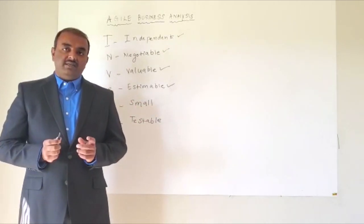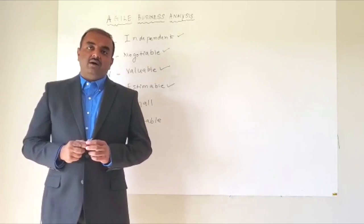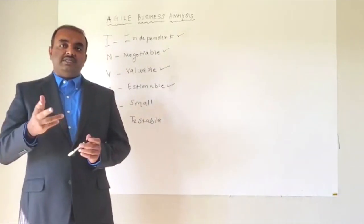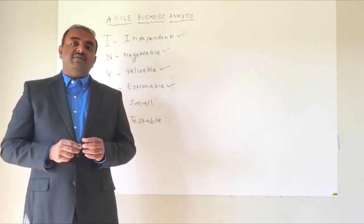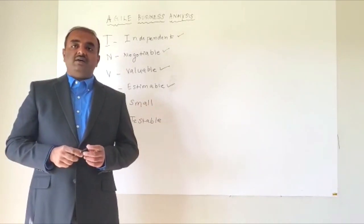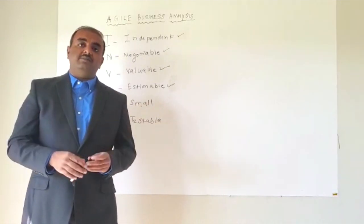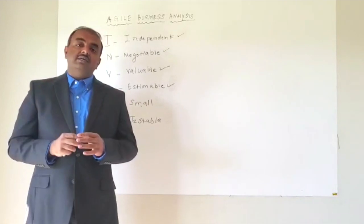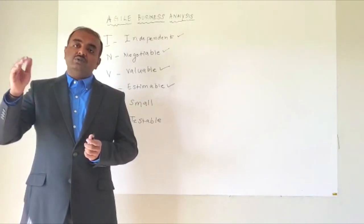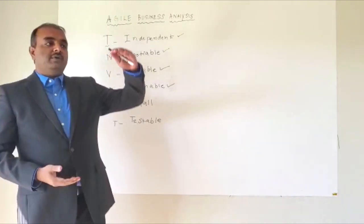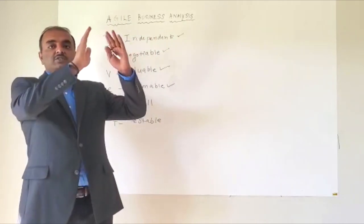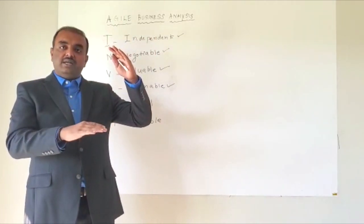One disclaimer here, every time when you have a product backlog, the stories that are going to be completed within next two iterations can be small. But if you have a story which has a priority of say 20 or 25 which has to be completed after six months, it is not required that you need to break those stories. It's like an iceberg. If you take an iceberg, there are smaller ice cubes in the top and there are bigger ice cubes in the bottom.